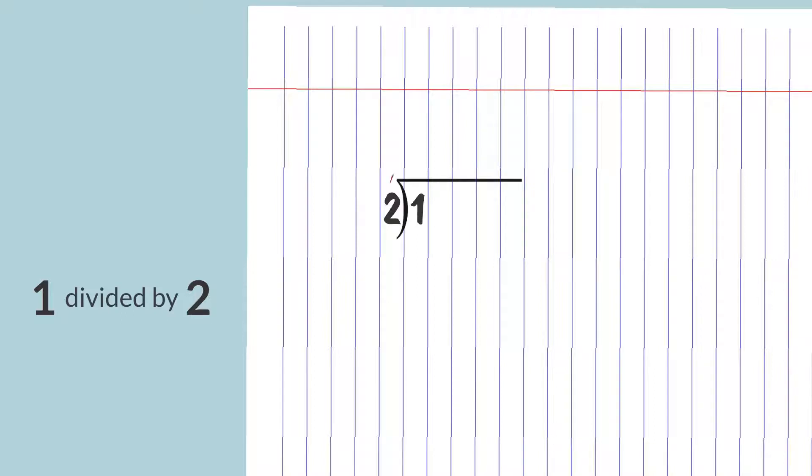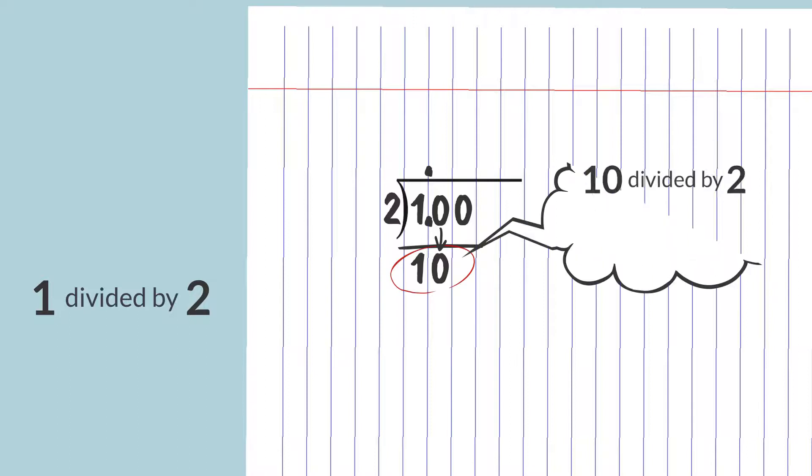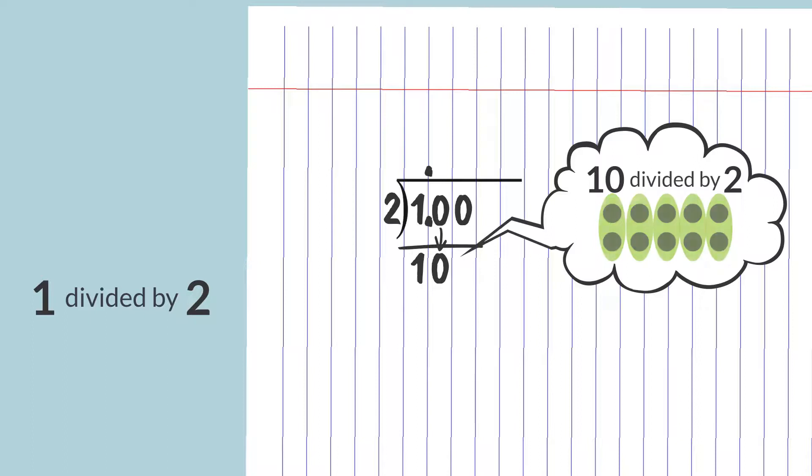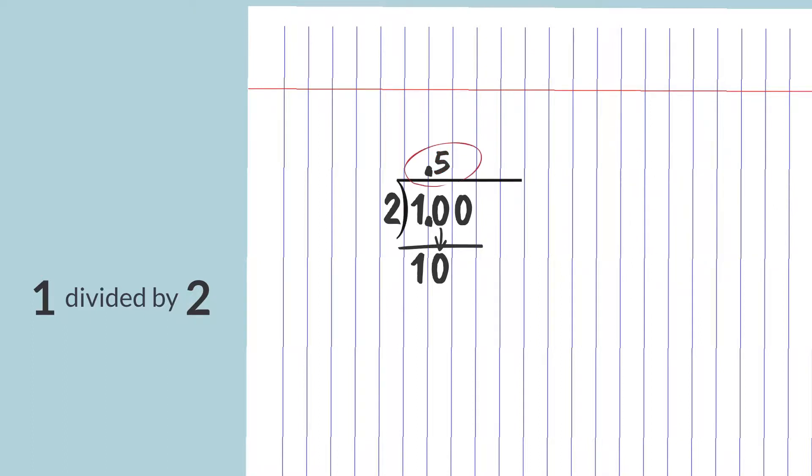How many times does two go into one? None. You can write a zero over the one to start your quotient, or just leave that part blank. Now write a decimal point after the one on the blue line and transfer it up to the same place in the quotient, right on the blue line. The number one has no tenths and no hundredths, so you can fill in two zeros to the right of the number one inside the division bracket. Bring the first zero down so you can continue dividing. How many times does two go into ten? Five times. Now your quotient should read 0.5. Five times two is ten. And ten minus ten is zero. So you could stop there.